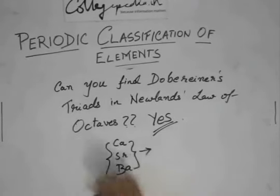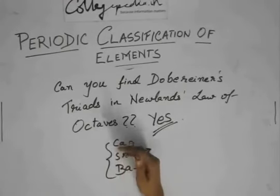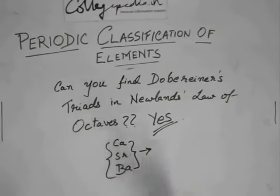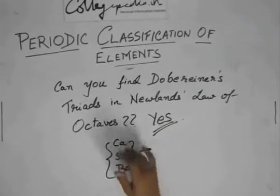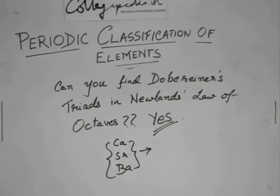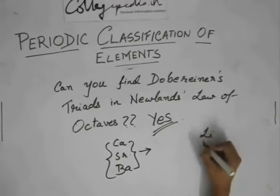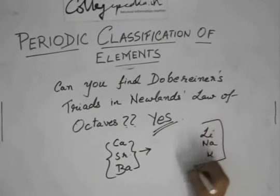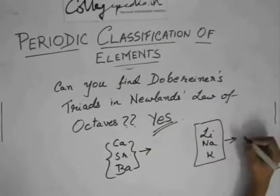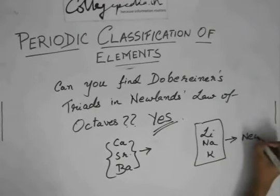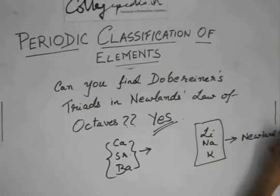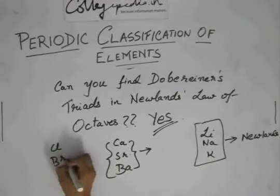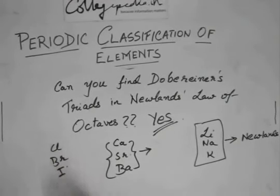From these two, you can see that calcium, strontium and barium, they were present in Dobereiner's triads also. And after extending Newland's law, you will find that calcium, strontium and barium existed in Newland's table also. And not only that. Lithium, sodium and potassium, they already exist in Newland, not even by extending. Without extending, they exist. And the third, which is chlorine, bromine, iodine, this also existed in Newland's law.